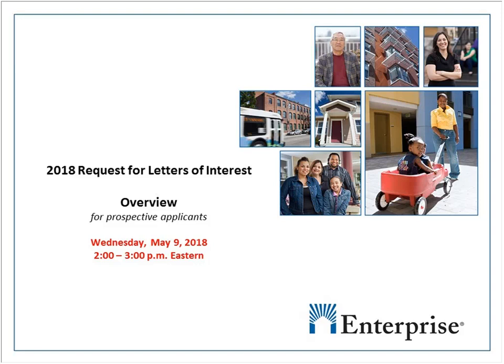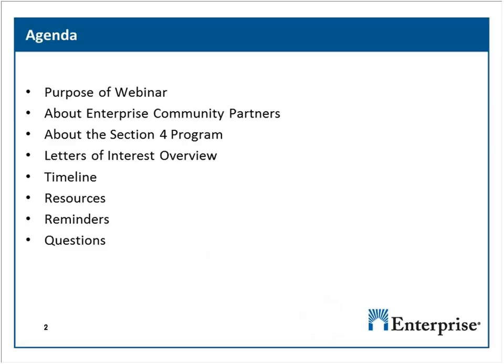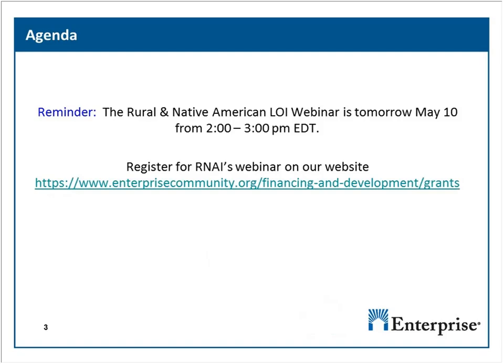This webinar is the national webinar. We have a rural and Native American webinar being held tomorrow at 2 p.m. Eastern Daylight Time. If you are unsure about whether you're in an urban or rural area, you can go to our website at enterprisecommunity.org/grants. Click on the Rural LOI, and on page 12 under Geographies of Interest, there's a link to a map where you can type in your zip code.